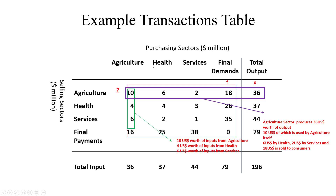Here is a simple numerical input-output table with three sectors: agriculture, health, and services, with a final demand column and total output and total input rows. For example, the agriculture sector produces 36 units of total output: 10 U.S. dollars worth used by agriculture itself, 6 U.S. dollars used by health, 2 U.S. dollars used by services, and 18 U.S. dollars sold to consumers. Reading the column for agriculture: 10 U.S. dollars worth of input comes from agriculture, 4 dollars from health, and 6 dollars from services, plus primary inputs such as imports and labor salaries.